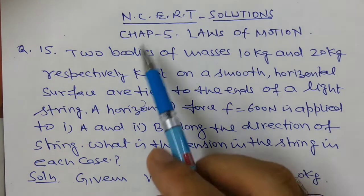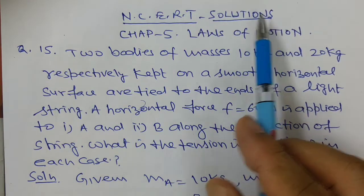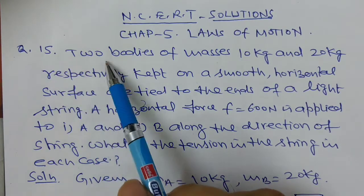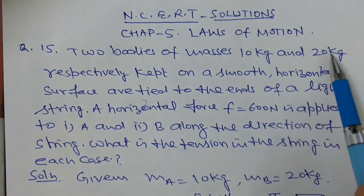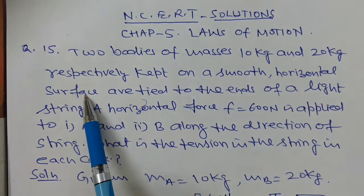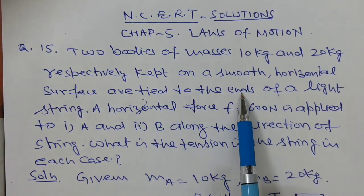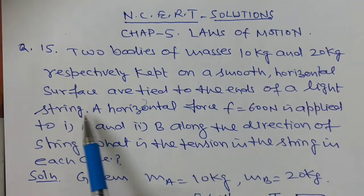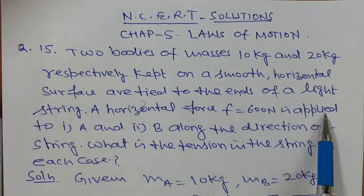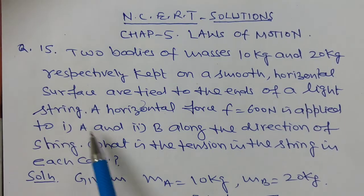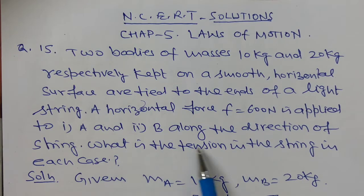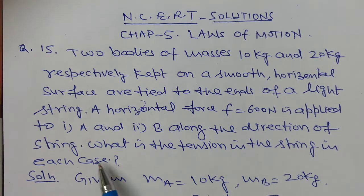Hello students, NCD solutions, chapter number 5, laws of motion, question number 15. Two bodies of mass — kg and 20 kg respectively — kept on a smooth horizontal surface are tied to the ends of a light string. A horizontal force F equal to 600 N is applied to body A and body B along the direction of the string. What is the tension in the string in each case?